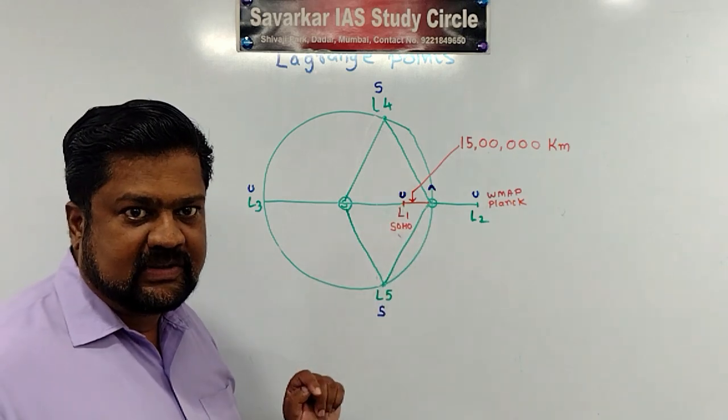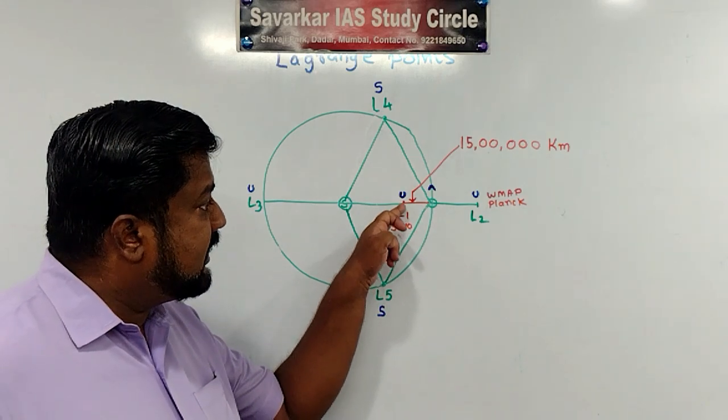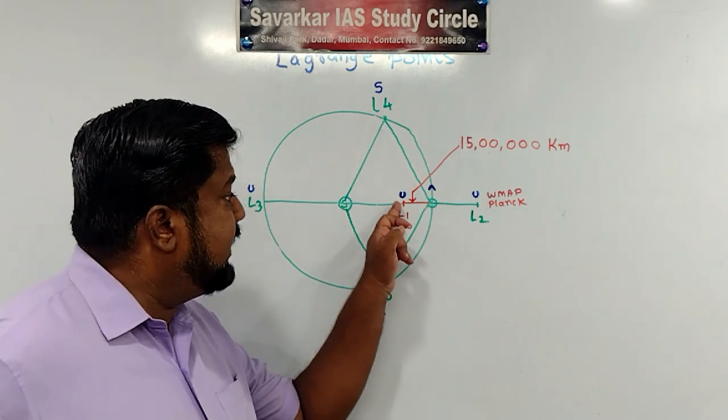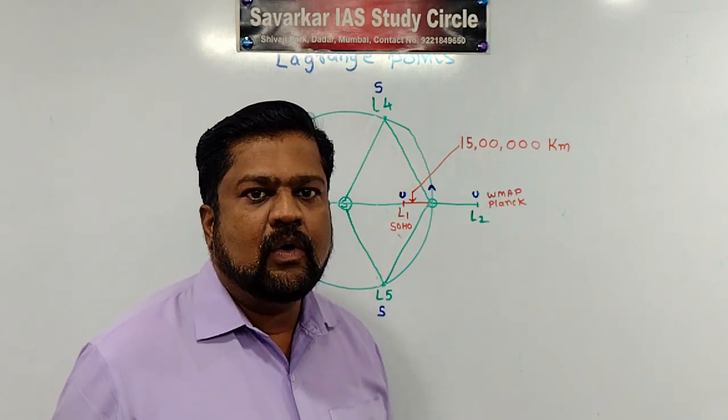Moon's orbit is also less than this orbit. So we have to place here. Then we can continuously observe sun without interruption.